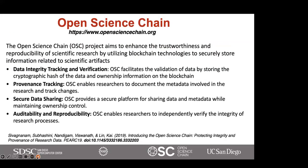This is exactly what Open Science Chain does. Open Science Chain uses blockchain technologies to facilitate the validation of data by storing the cryptographic hash of the data and the ownership information on the blockchain, ensuring immutability of the data records. OSC helps with provenance metadata tracking by enabling researchers to document the metadata involved in the research and track changes to it as the research or data set evolves. Open Science Chain provides a cyber infrastructure platform for sharing this information — both the data and its metadata — keeps track of who the owner is, and enables other researchers to independently verify the integrity of the whole research process.